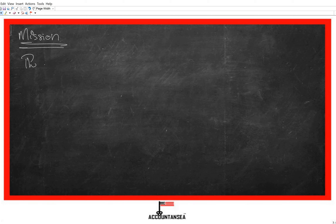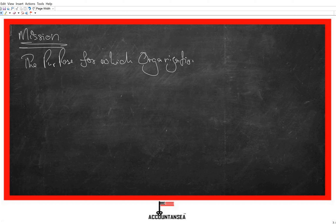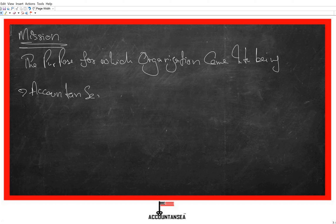A mission is the purpose for which an organization came into being. For example, this online college in accountancy came into being because the purpose was to provide quality ACCA education to students with flexibility and comfort — so students can study from anywhere they want.